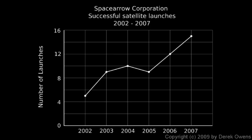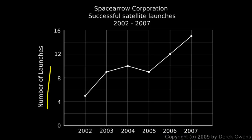Now we're talking about line graphs, and we'll start off with how to read a line graph by taking a look at one. This is Space Arrow Corporation's successful satellite launches from 2002 to 2007. Down on the bottom are the years 2002 to 2007, and on the side are the number of launches. The scale goes from zero up to four, so the line right in between is two.